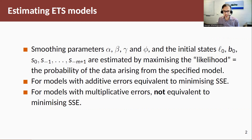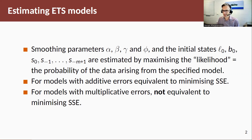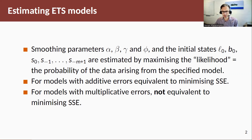The way we're going to estimate these models is maximum likelihood estimation. The idea is that we want to maximize the probability that the data you observe comes from the model you are interested in — given the data, maximize the likelihood. For additive error models it turns out to be equivalent to minimizing sum of squared errors. For models with multiplicative errors, where you have heteroscedastic relative errors, this is not equivalent to minimizing sum of squared errors.